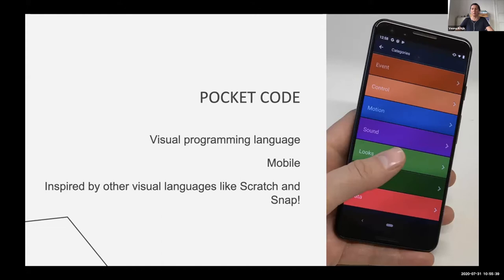So Pocket Code is a visual programming language which users can use just on a mobile phone. They don't need a PC or whatsoever, so they can program on a mobile phone. Our project was inspired by Scratch. We started in 2010 with development of Pocket Code and we also were inspired by Snap.